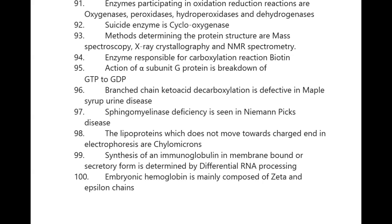Embryonic hemoglobin is mainly composed of zeta and epsilon chains. This concludes the 100 most important one-liners as part of Series 1 of the Rapid Revision Course. The next set will follow — please complete all subjects of the rapid revision course. Good luck and thank you!